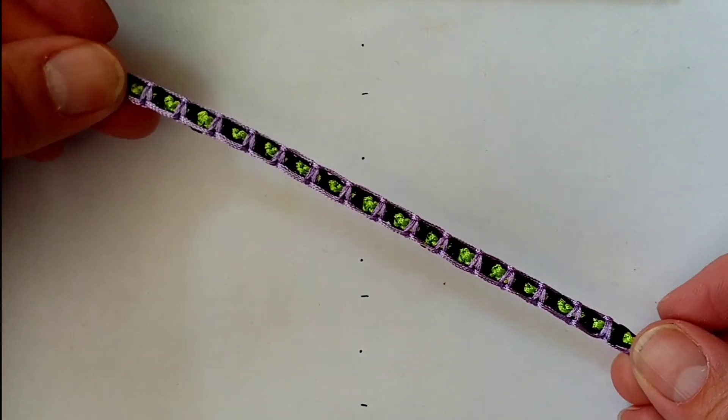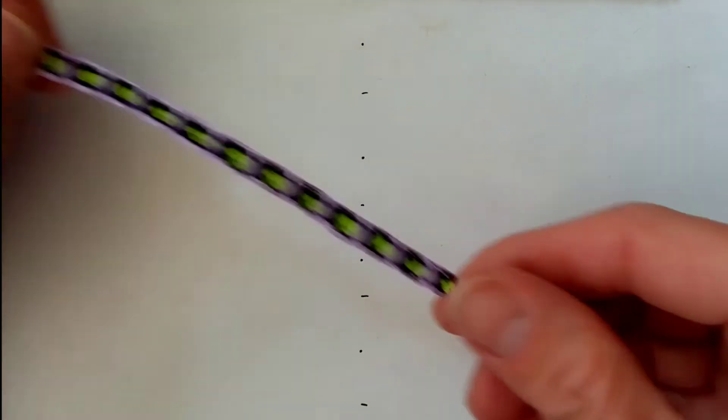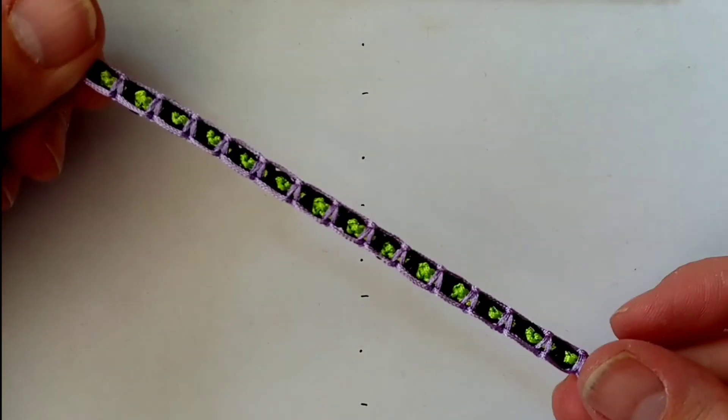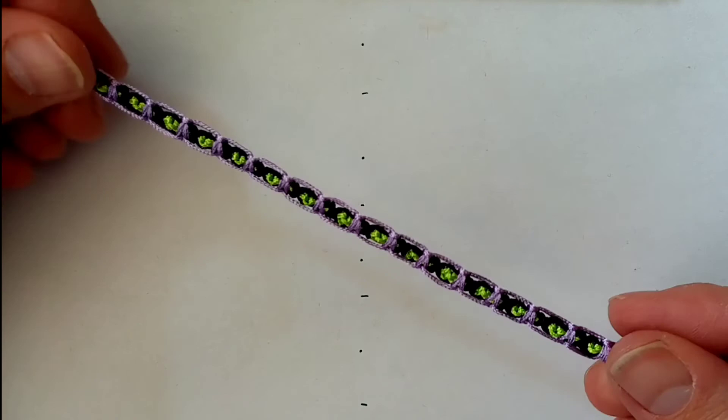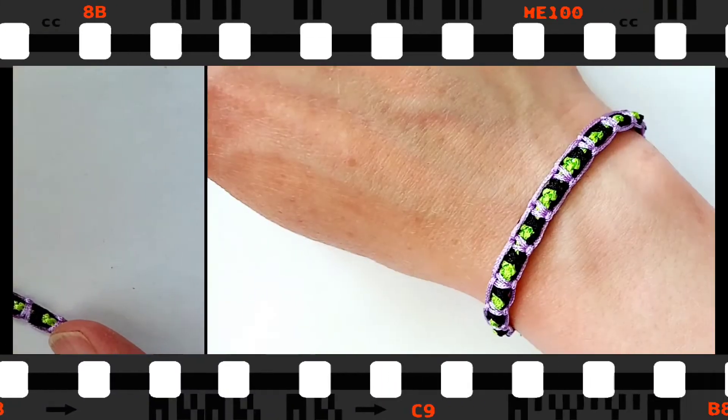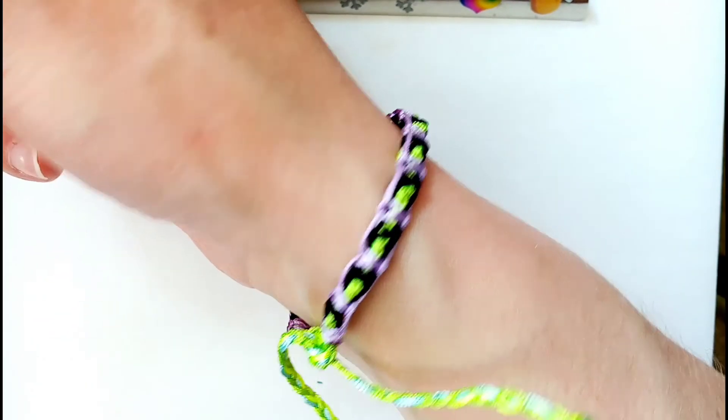And when you're finished you should end up with something that looks like this. So I've done braided tie-ons to do a tie-on fastening but you could do whichever fastening you prefer, and that is your completed macrame bracelet.